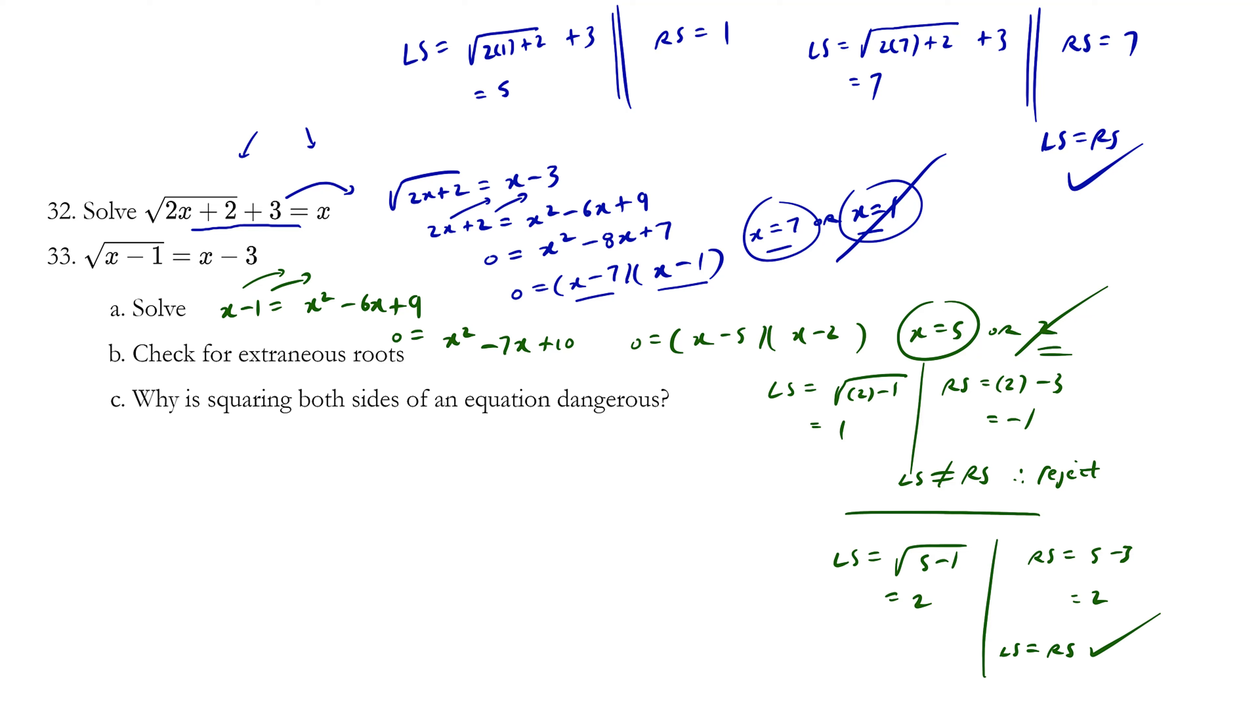Squaring both sides of an equation is dangerous, because when you square, we introduce a quadratic in which there's two possible answers. We may be introducing extraneous roots.